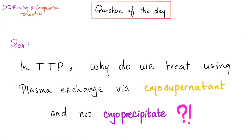First, let me answer the question from the previous video. In TTP, why do we treat using plasma exchange via cryosupernatant and not through cryoprecipitate?